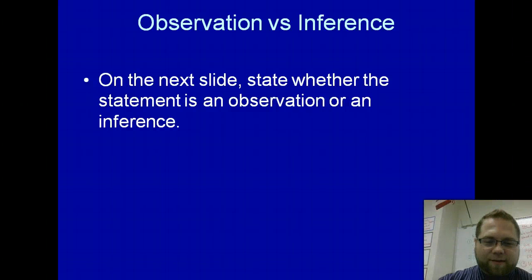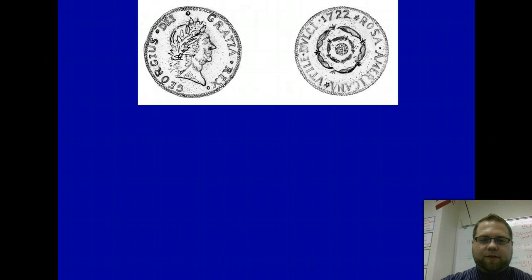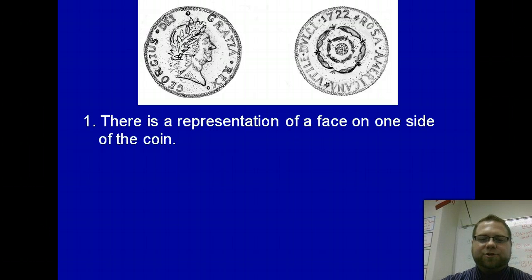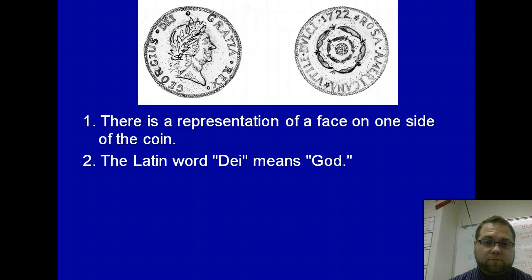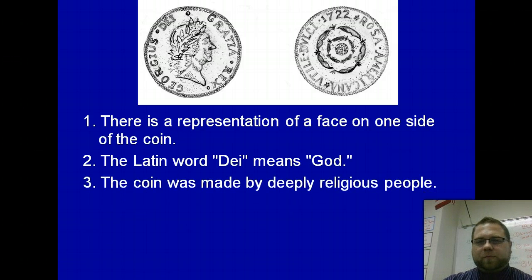We're going to look at these two coins and state whether a statement is an observation or an inference. There's a representation of a face on one side of the coin — is that an observation or an inference? There's a face on the coin, so it's an observation. The Latin word 'dei' means God. Well, if you're looking at it, your inference might be that this is written in Latin. If you know for sure, you can take it as an observation. The coin was made by deeply religious people — that is a clear inference, because just because the word of God is on there does not mean they are necessarily religious people.